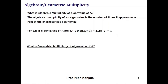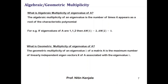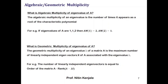The geometric multiplicity of an eigenvalue of A is the maximum number of linearly independent eigenvectors associated with it. If λ is an eigenvalue and x1, x2 are two linearly independent eigenvectors associated with λ, then the geometric multiplicity of λ is 2. The number of linearly independent eigenvectors equals the order of the matrix minus the rank of the matrix (A minus λI).